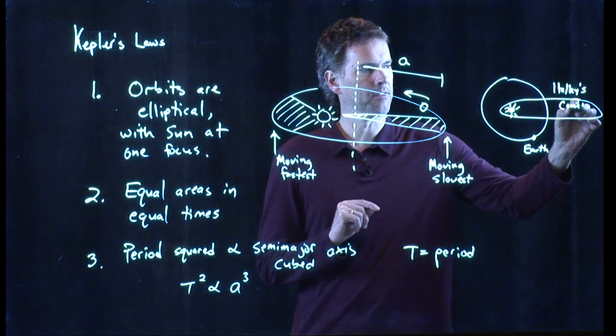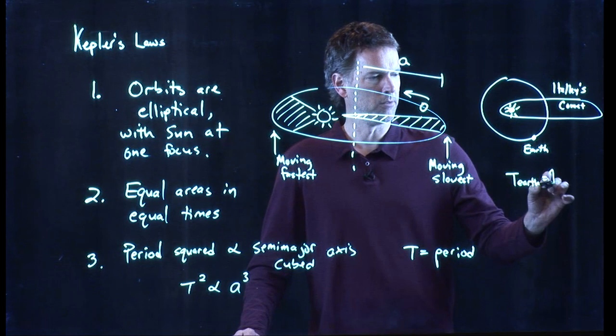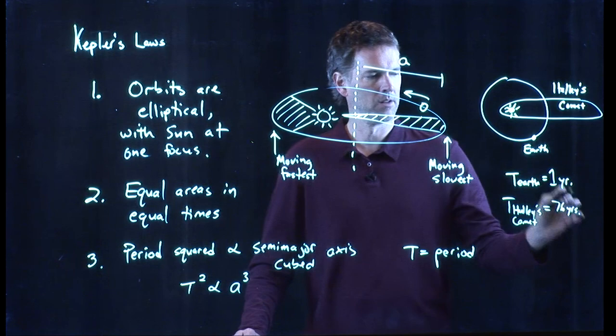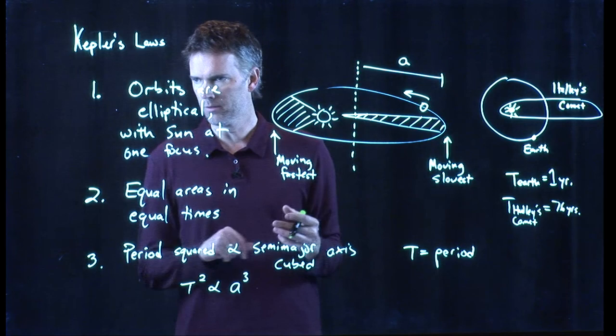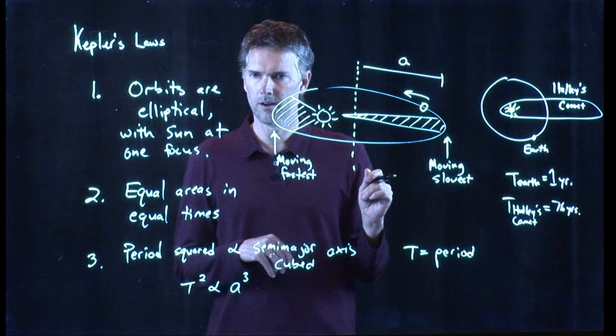Halley's Comet has a long period. If that semi-major axis is big, it has to have a very long period. And we know what that is. T for the Earth is one year. But T for Halley's Comet, what's the period of Halley's Comet? It is about 76 years. So we're going to see it again in 2060. You guys will likely be around to take a look for Halley's Comet in 2060-something. And definitely try to catch that with your telescope, if you're around. It's a really nice sight to see.